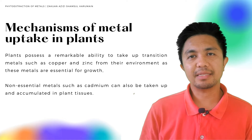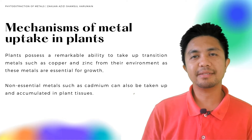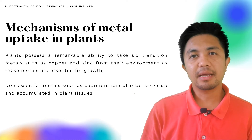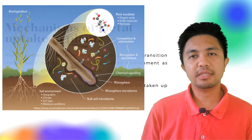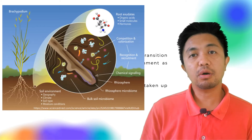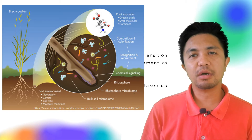metals that are tightly bound to the soil particles can be solubilized by secretion of chelators such as citrate, which is released from plant roots, or by acidification of the rhizosphere.